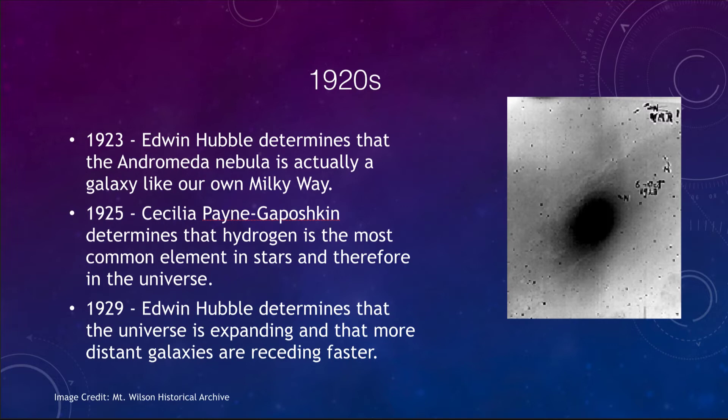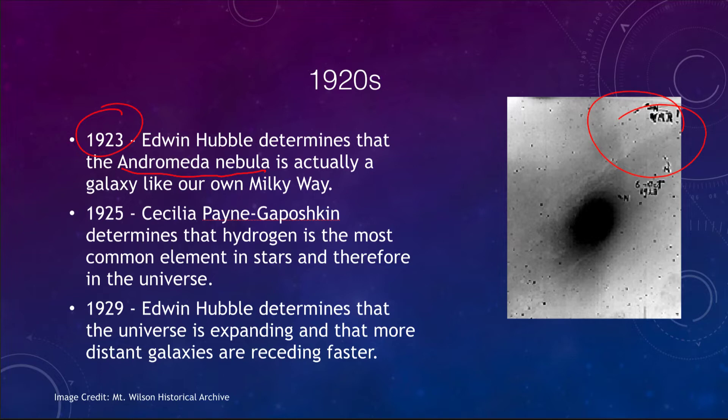Let's go back to the 1920s. One of the things discovered in 1923 is that Edwin Hubble determined that the Andromeda nebula is actually a galaxy like our own Milky Way. He saw variable stars in images he took of the Andromeda galaxy, and because he was able to determine that they were Cepheid variables like those in our own galaxy, he was able to use them to determine distances.